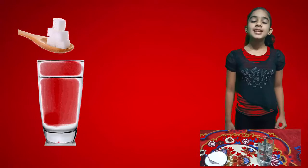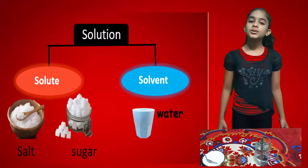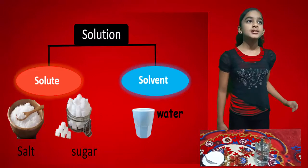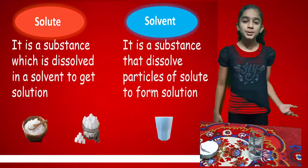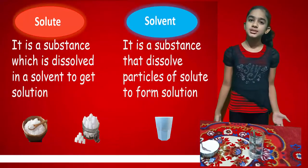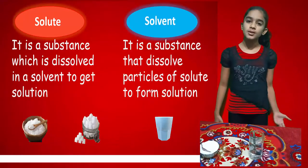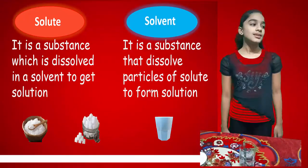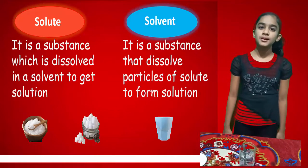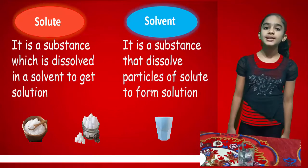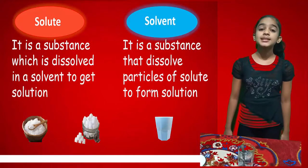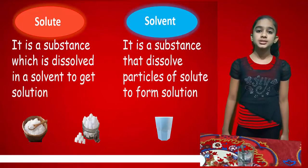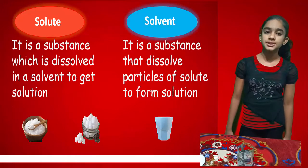Solutions like sugar in water and salt in water have two components. One is solute and the other one is solvent. Solute is a substance which is dissolved in solvent to get a solution, like sugar in sugar water and salt in salt water. Solvent is a substance in which solute is dissolved to get a solution.